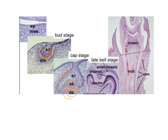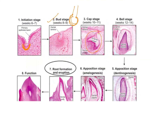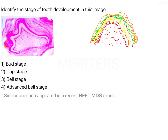The basophilic layer is the enamel, the eosinophilic layer is the dentine, these are the odontoblasts, these are the ameloblasts, and these are the dental papilla cells. The dental papilla cells will later give rise to all the cells of the pulp.